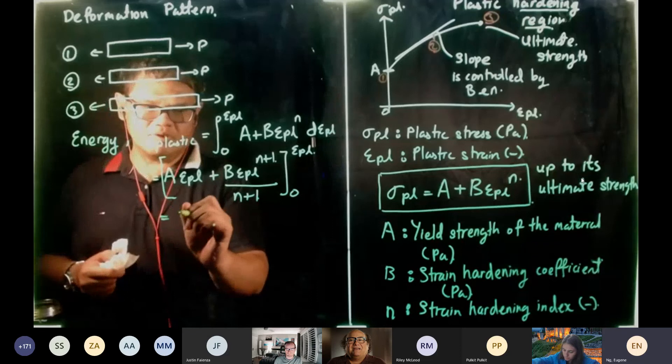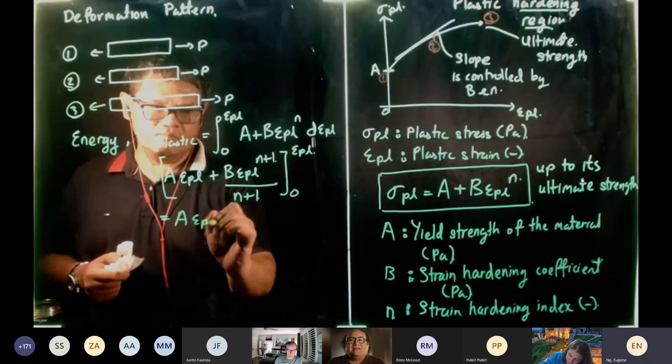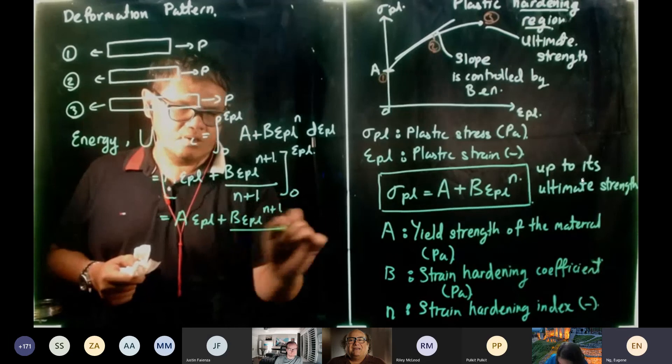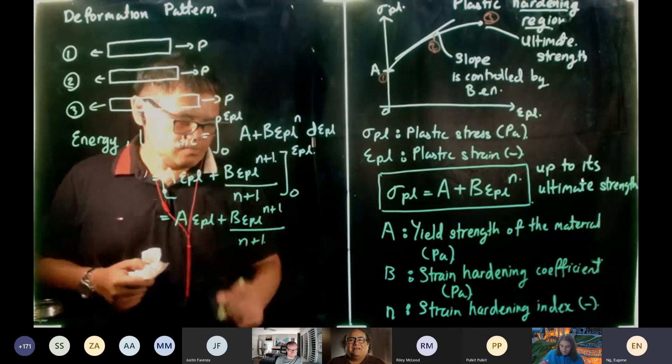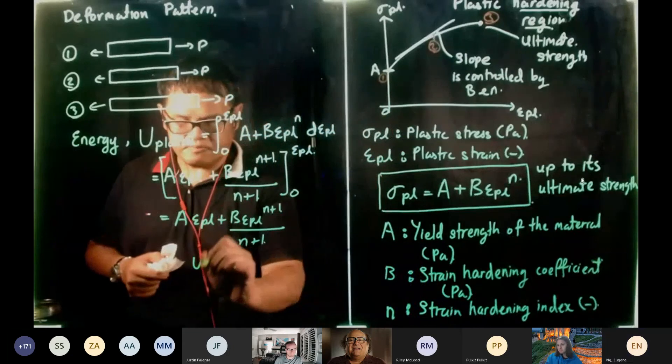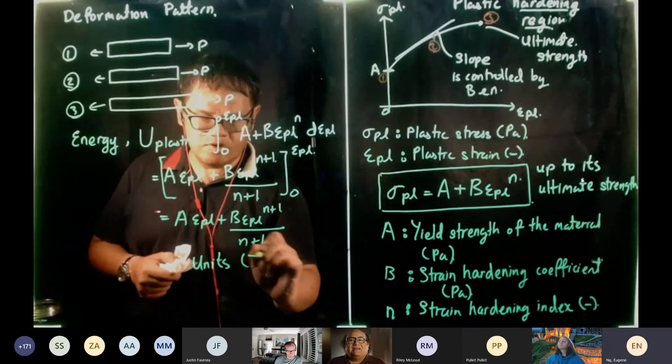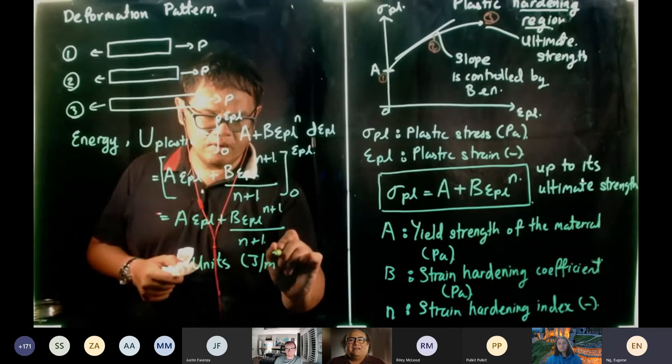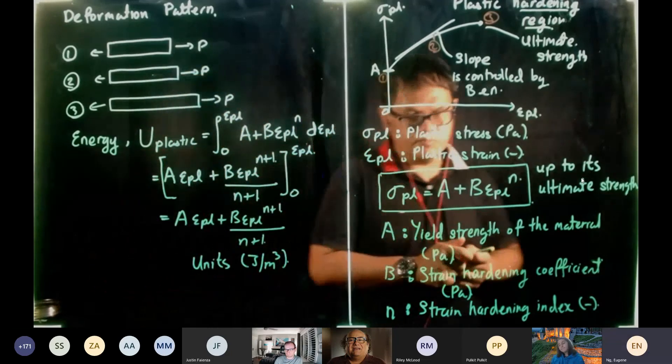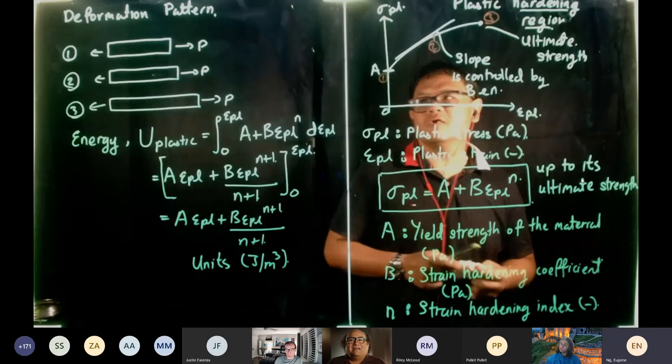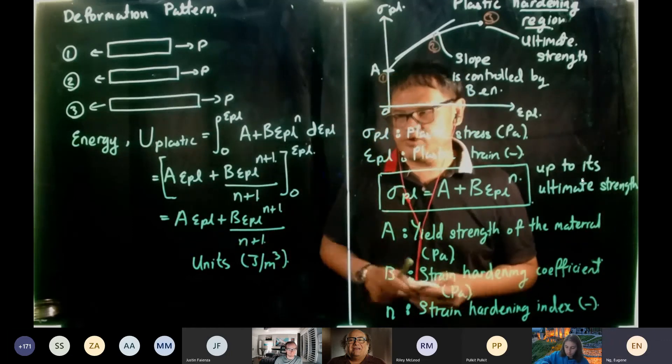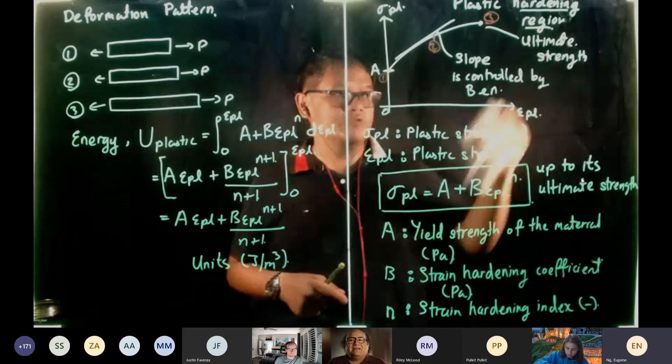So just substitute in. Nothing difficult. Then once again, the units is in joules per meter cube. And then I'm going to, I'm just briefly going to describe the necking region.